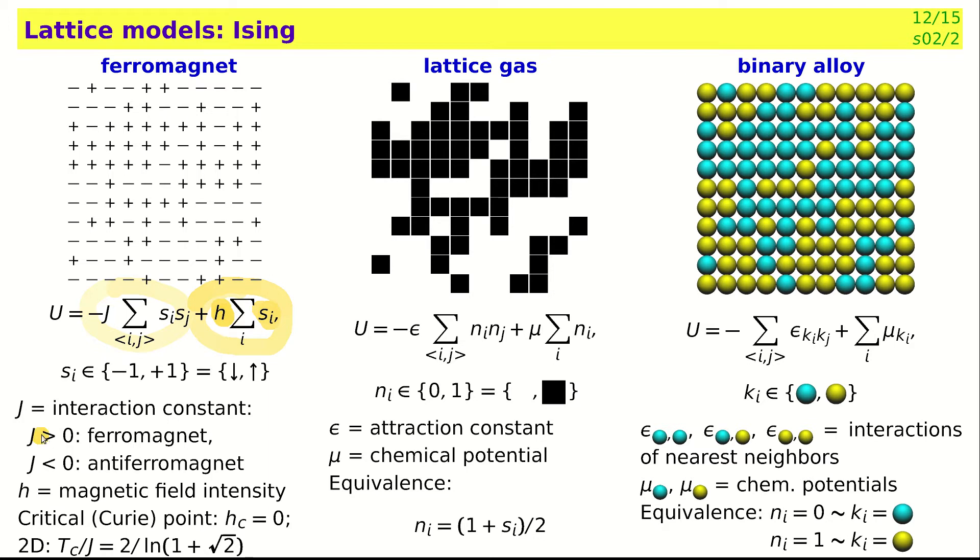Usually we study the ferromagnet. In two dimensions we even know the position of the critical point, also called the Curie point. Iron or nickel is paramagnetic above the Curie point, ferromagnetic below it. I will show you simulation shortly. We know it analytically in 2D. In 3D it's not known analytically, but there are very accurate values obtained by simulations and other theoretical works.